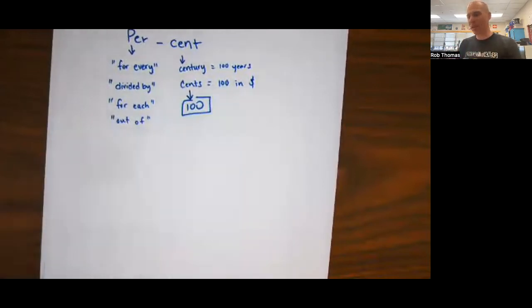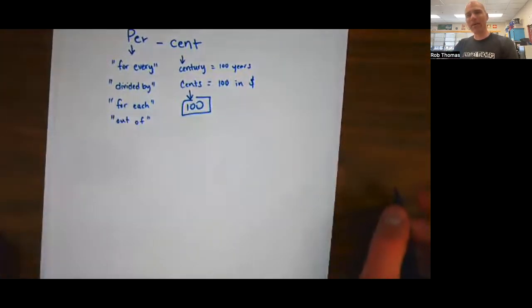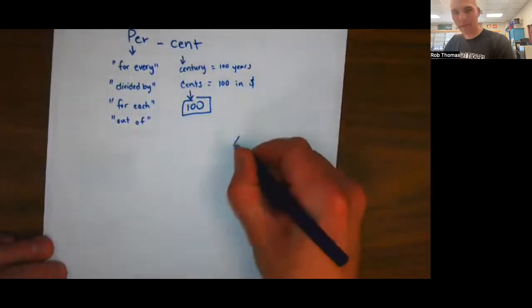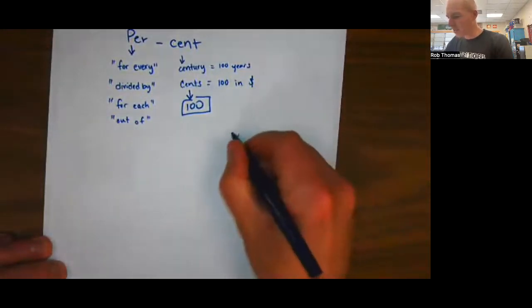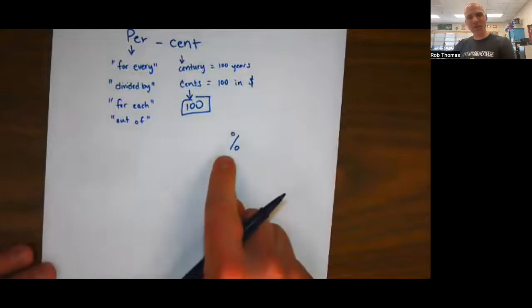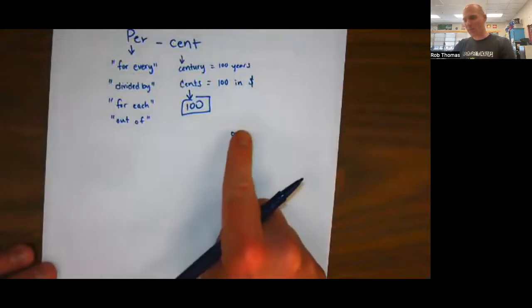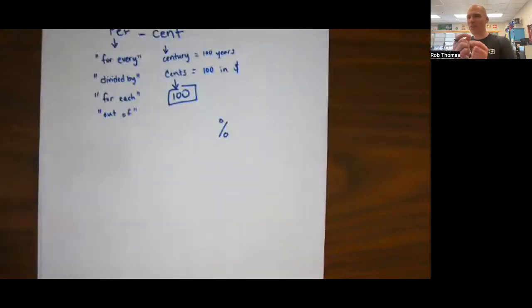So percent means for every one hundred, or divided by one hundred, or for each one hundred, or out of one hundred. Now let's look at the percent symbol itself. You might not have ever really thought about it, but it's literally made up of a one, two zeros making a hundred, with a division built in. Look, it's a one, but it's just kind of slanted, leaning. Two zeros. And see how it sort of almost makes a fraction, with a zero on top and a zero on bottom, which isn't really a valid fraction. But fractions mean division, right? So there's hints of division and the number one hundred built into the symbol itself.